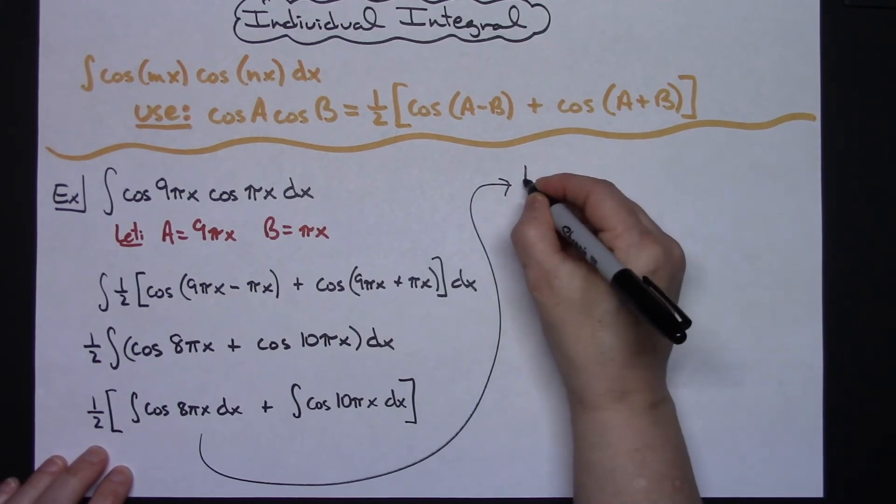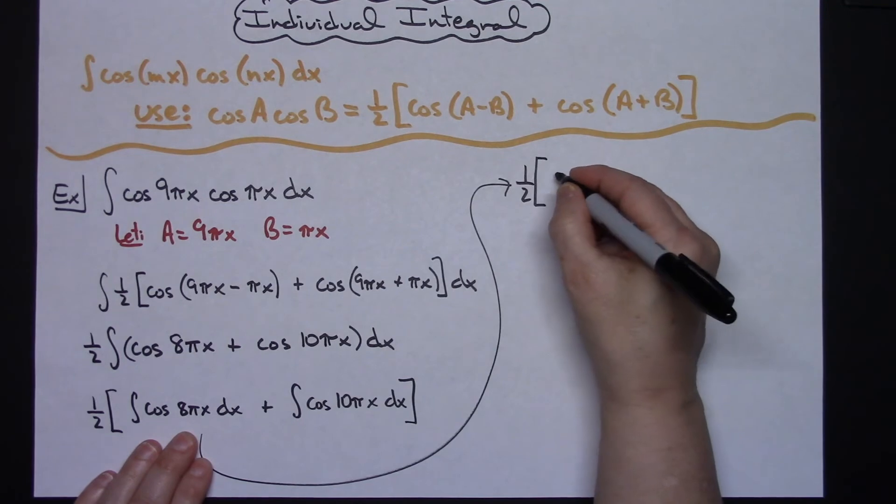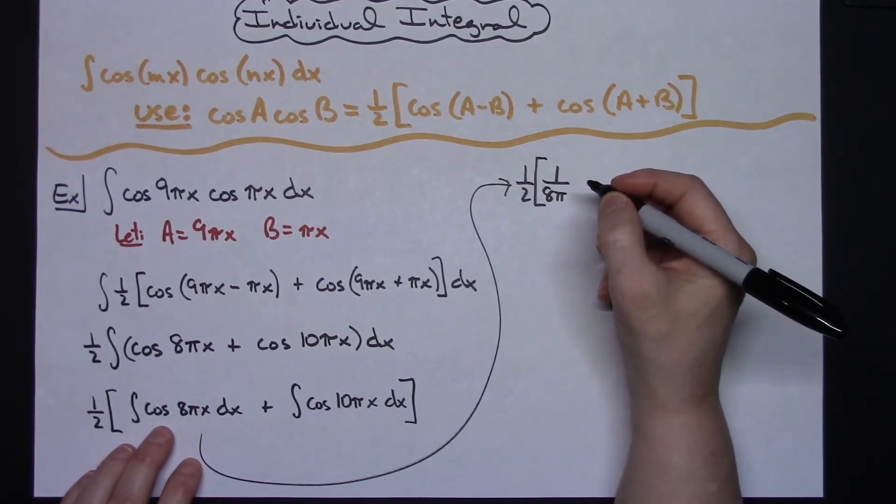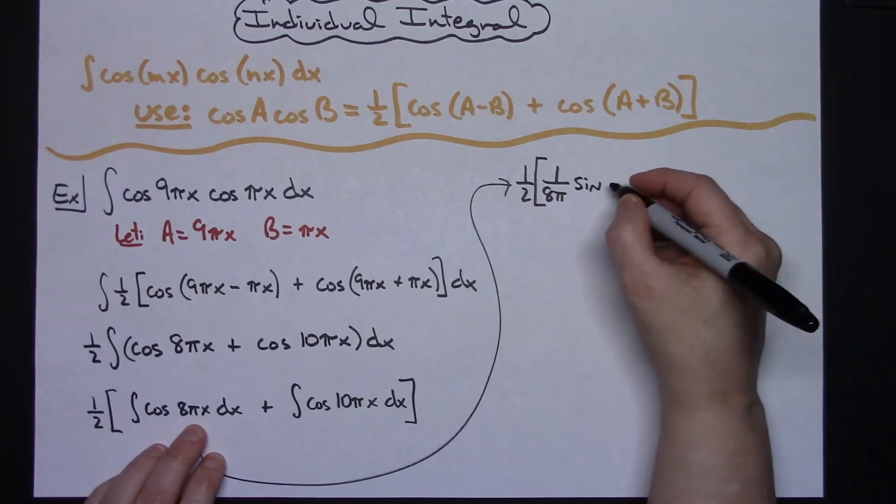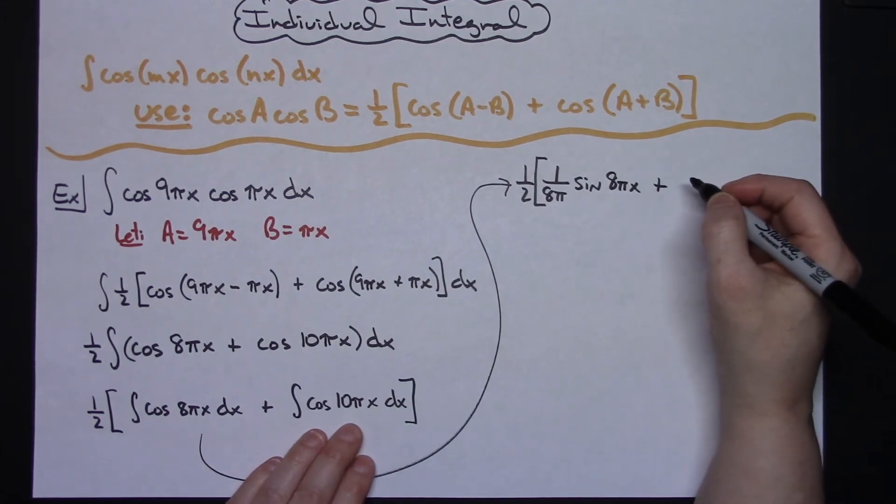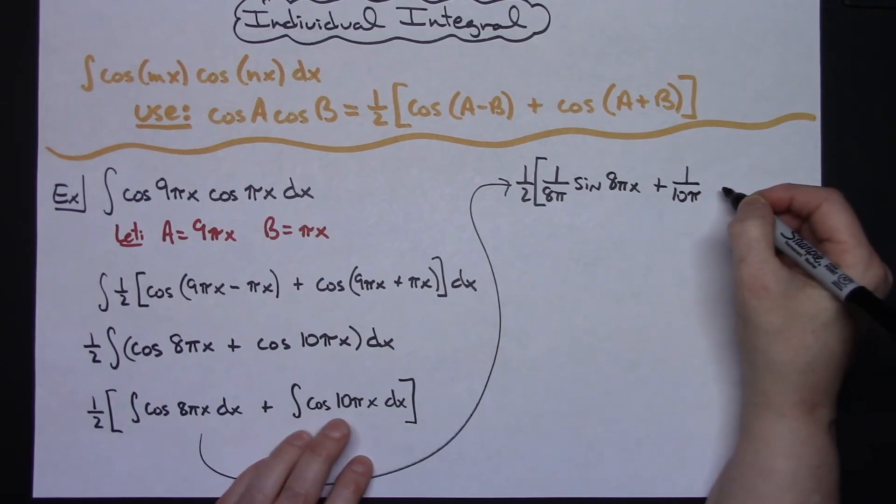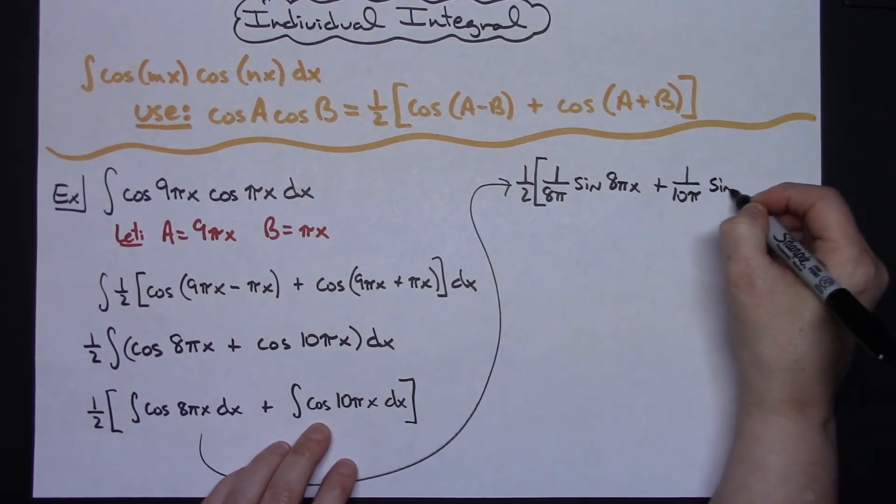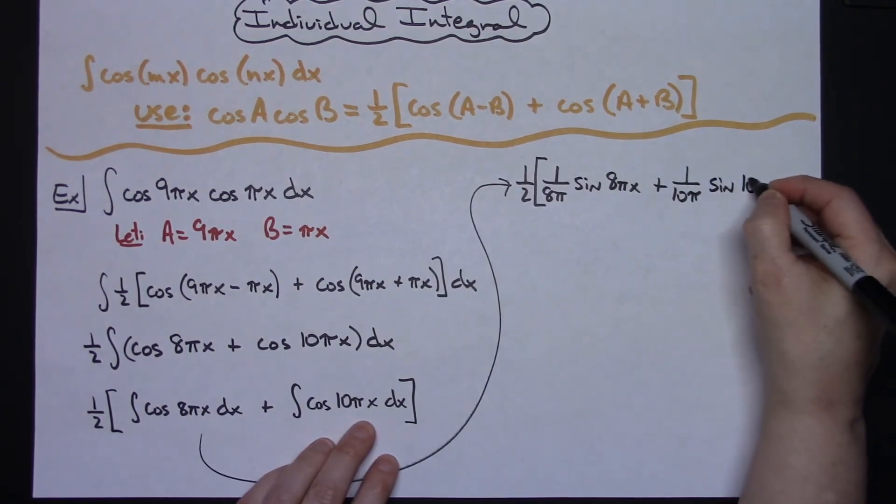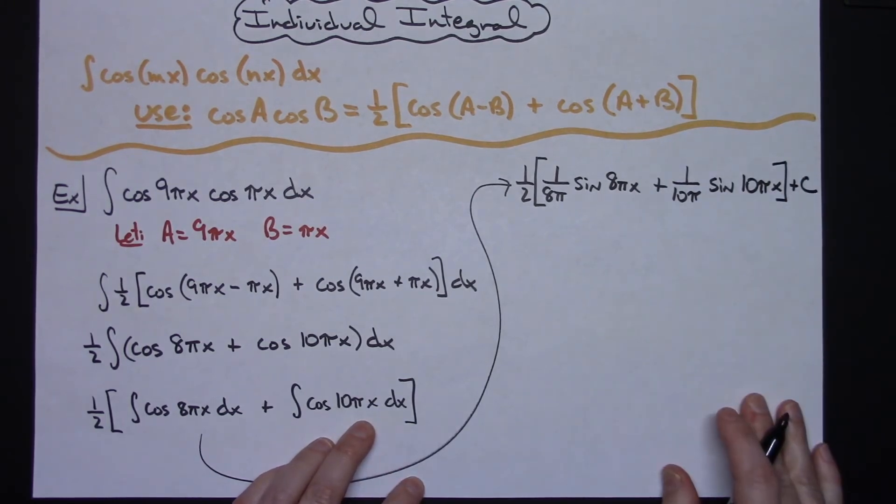To integrate, I'll have that one half times the quantity. Integrating, I will pull out the 1 over 8π. Integrating cosine I get sine, leaving that inside function alone, so 8πx. And then plus, doing the same thing, I'm going to pull out the 1 over 10π. Integrating cosine I get sine, leaving the inside function alone, 10πx, and then I can put the plus C on there.